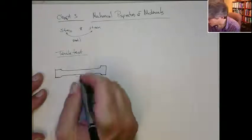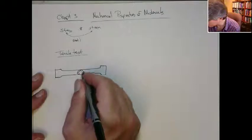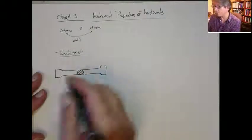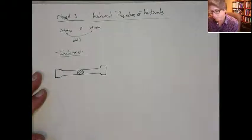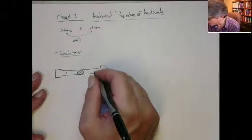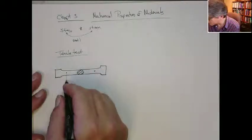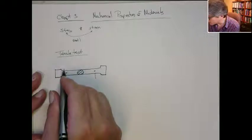Like I said, it's typically circular, although sometimes people have little, they call it dog bone specimens because they have a square cross section.